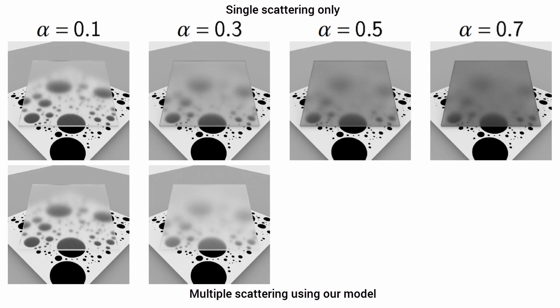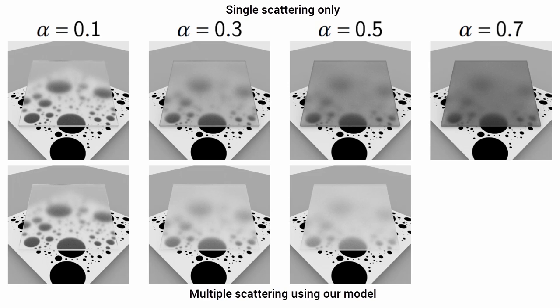Beyond fixing the darkening problem, our goal is to derive a physically based model that is able to make accurate predictions compared to reference data. More specifically, we derived the multiple scattering component of a specific kind of microsurface, the Smith microsurface model.